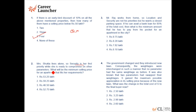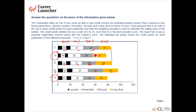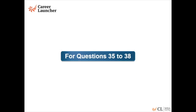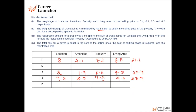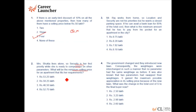Question 2: Mrs. Shukla lives alone, so security is her first priority, while she's ready to compromise on other parameters. To find the minimum selling price, I won't include parking. The properties with the best security rating are T and Q. We've already calculated both — T is cheaper. T's weighted average is 21.1, so the selling price is 21.1 × 2.5.